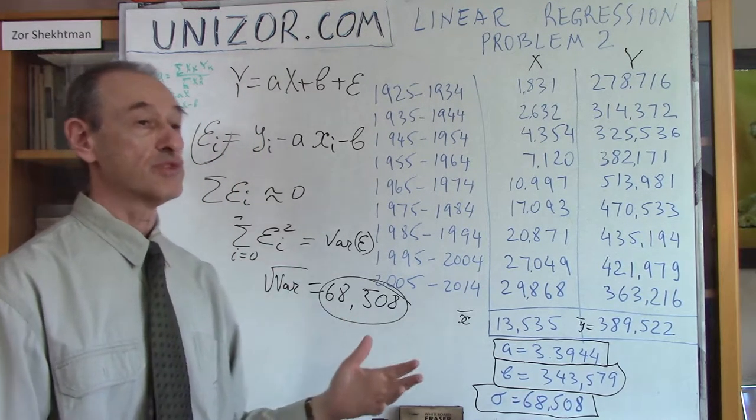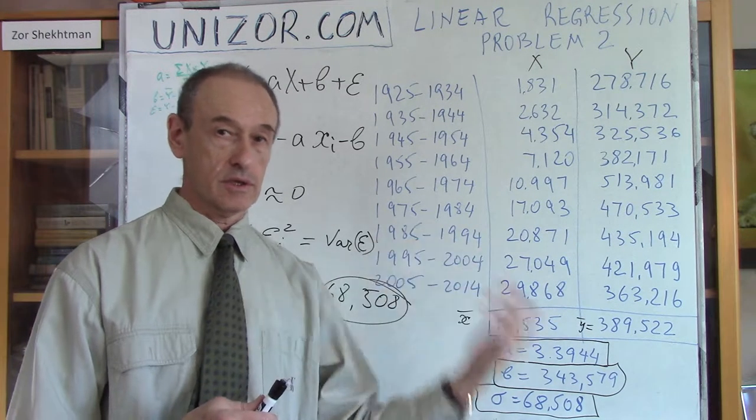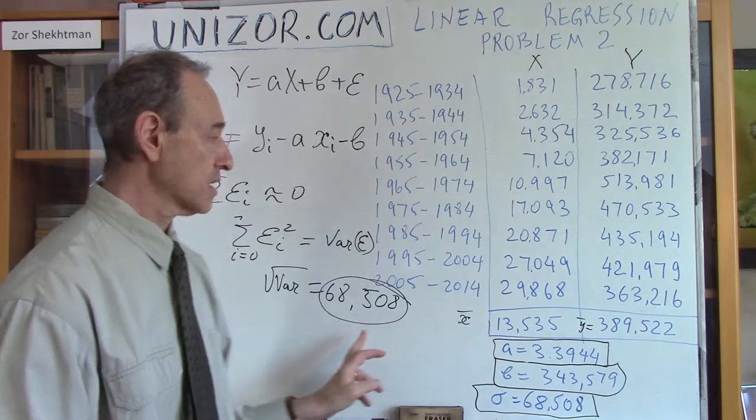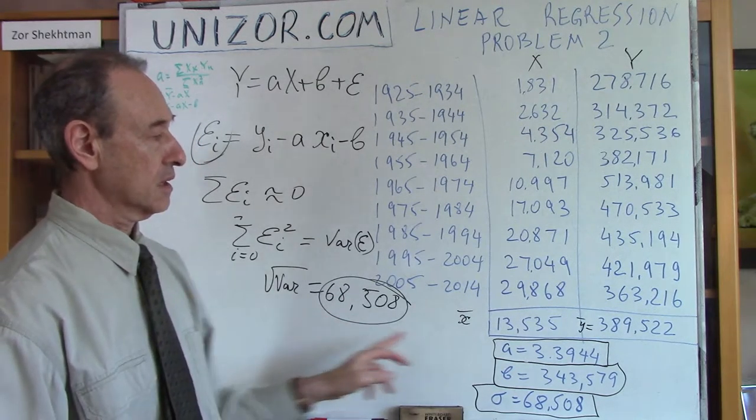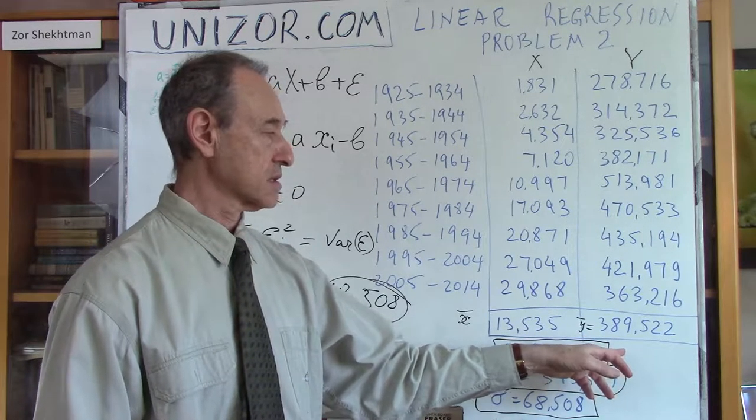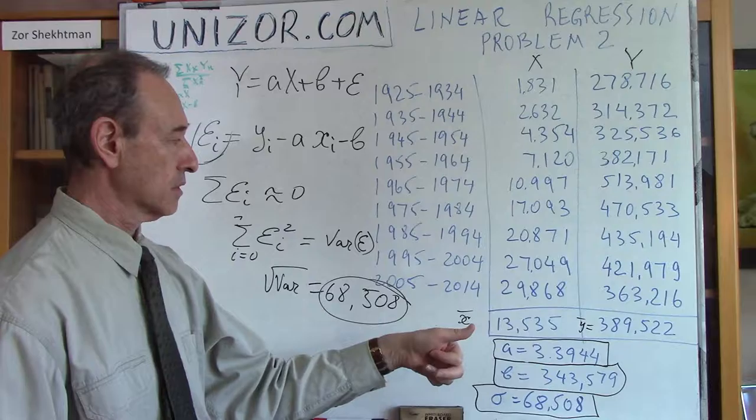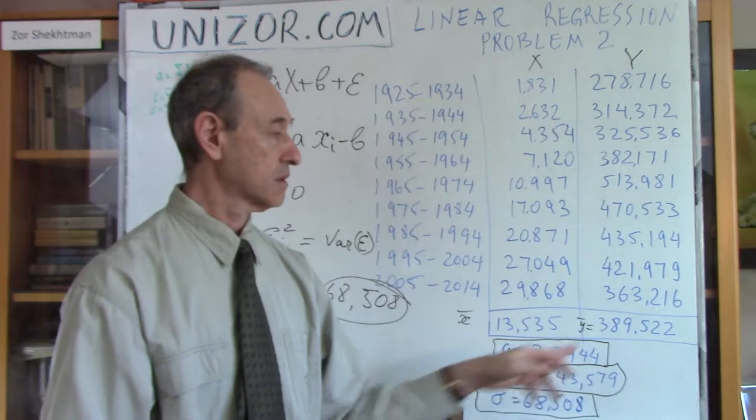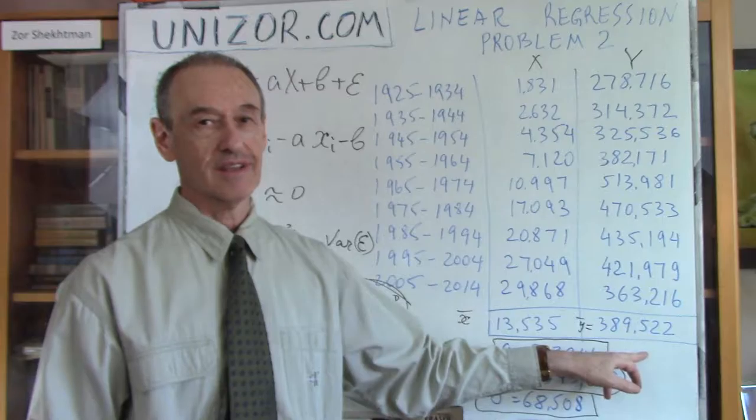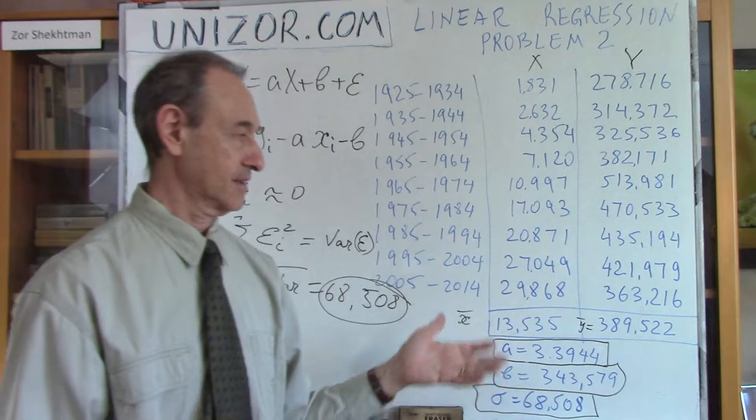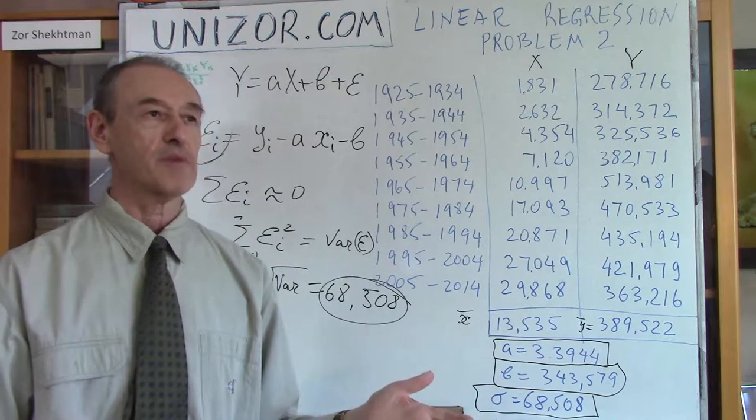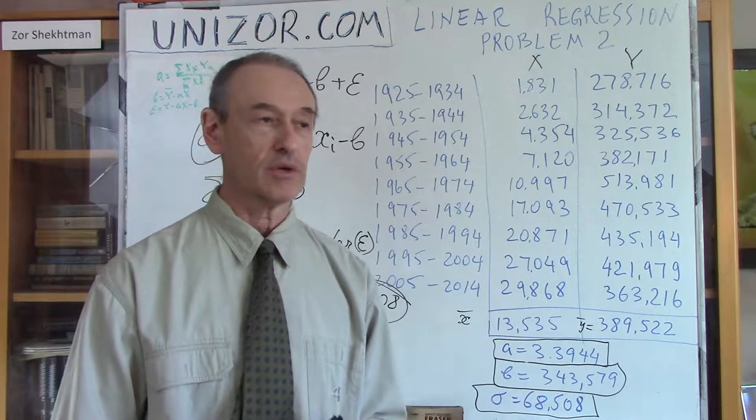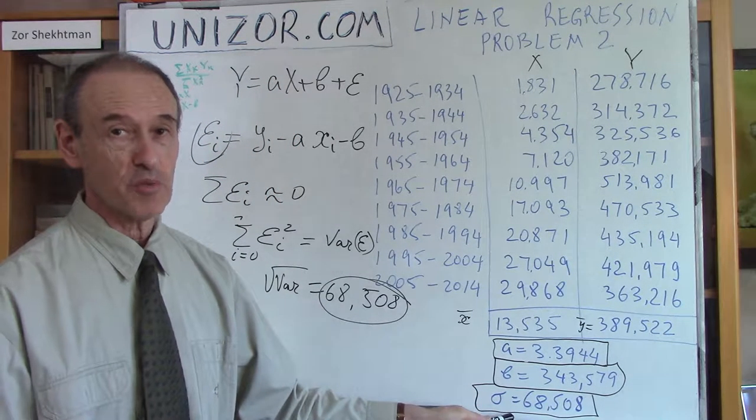Actually, I have calculated this. I mean, if I will add all the epsilons calculated like this, I did it on a spreadsheet actually. The result is something like minus one or something like this, very small number relative to these big numbers. But the problem is this. When I calculated based on these values, when I have calculated sigma epsilon, this is variation, and took a square root of it, it was 68,508. Is it good or bad? It's terrible.